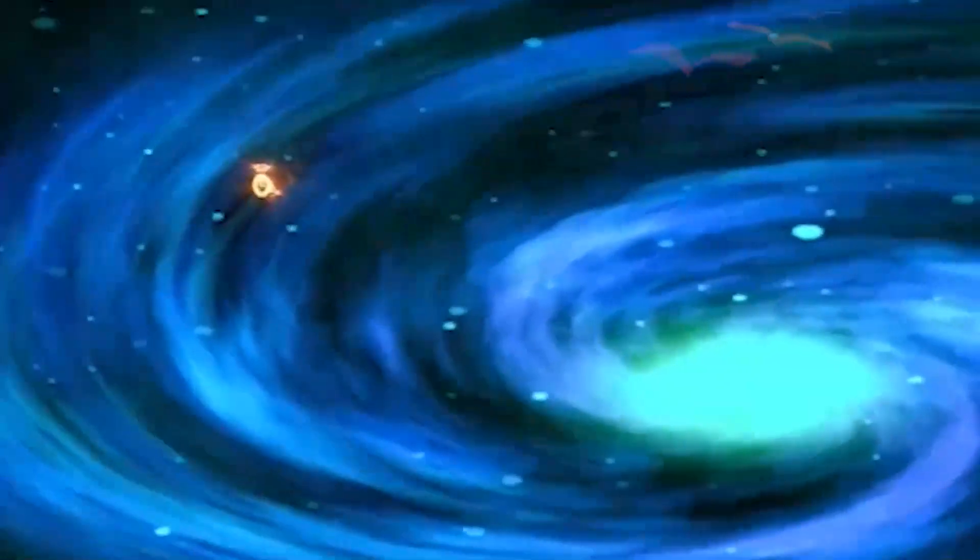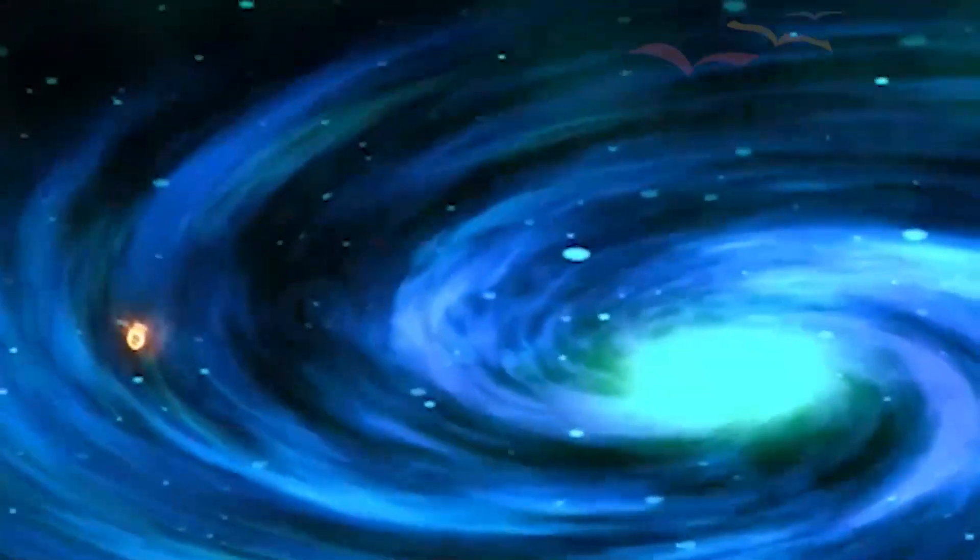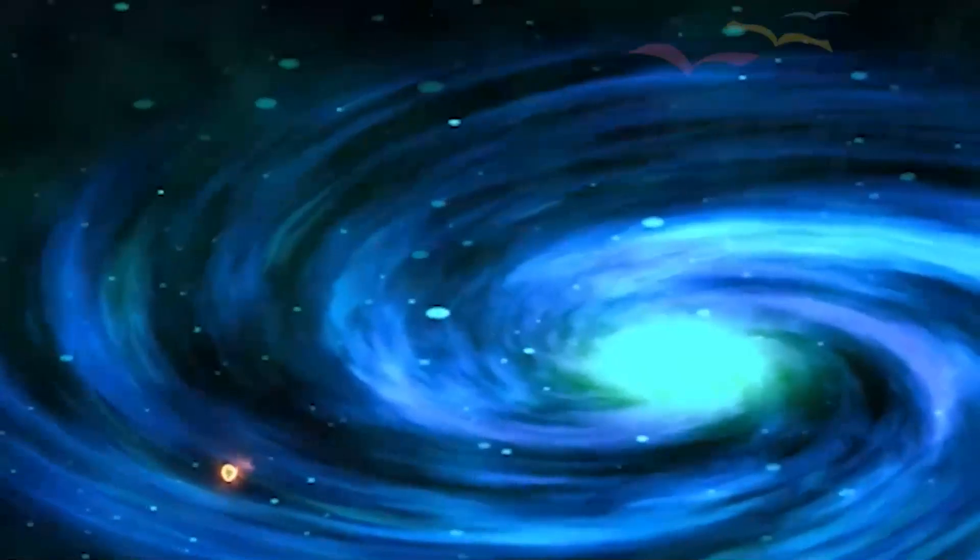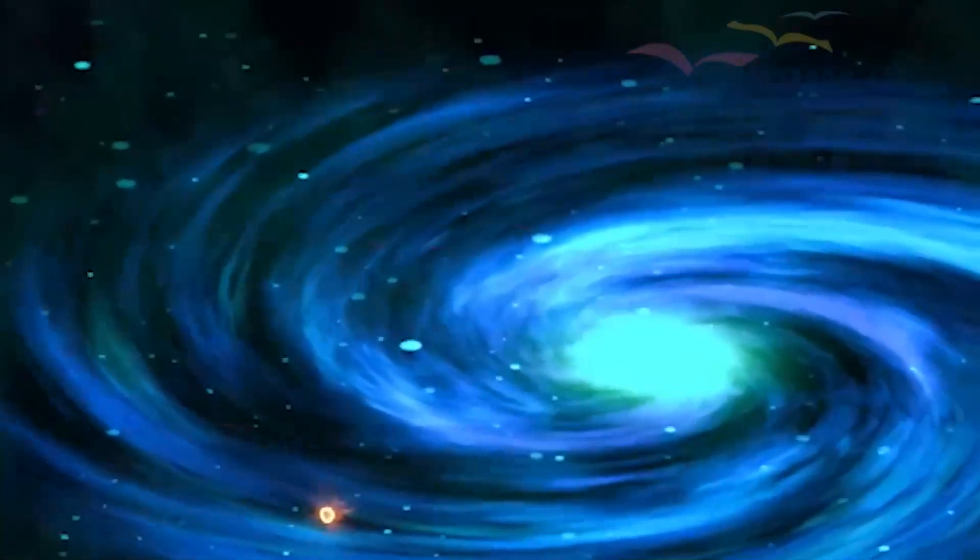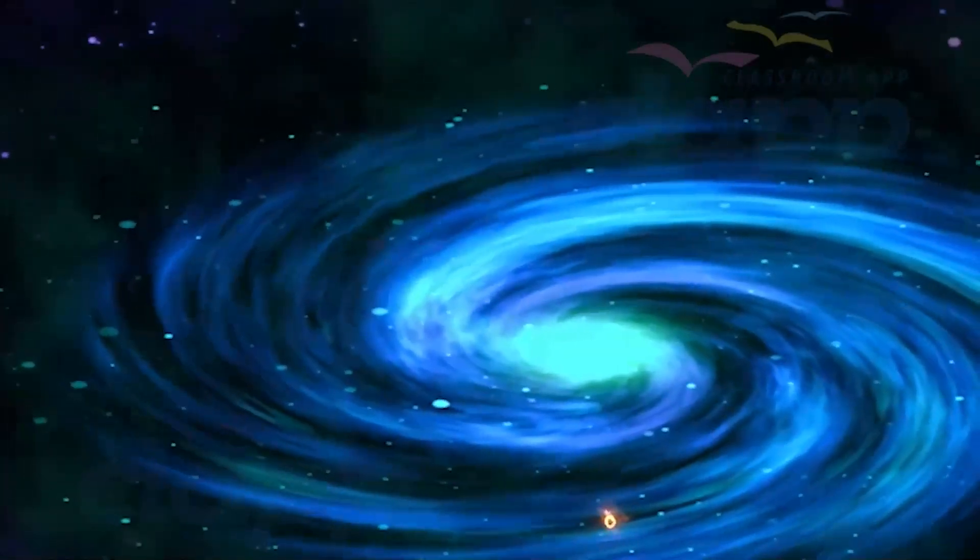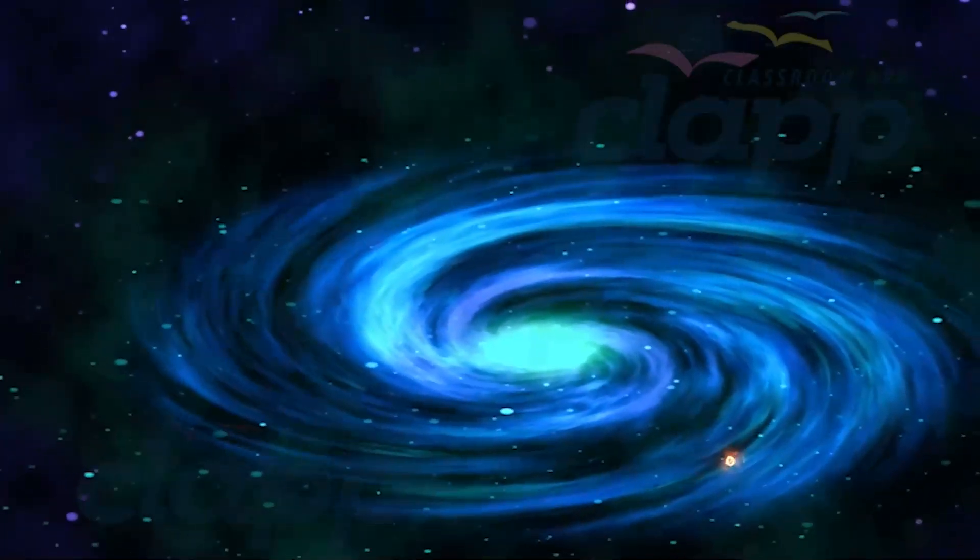Our solar system is part of the Milky Way galaxy. Our solar system rotates around the center of the galaxy at a speed of around 224 kilometers per second. It takes 25 crore years (250 million years) to complete one rotation in the galaxy.